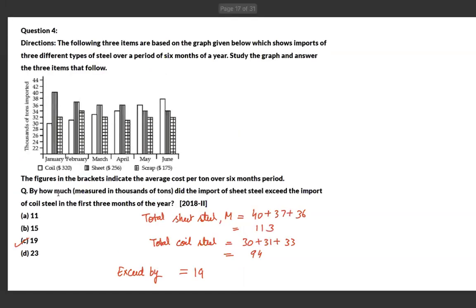The third question asks by how much sheet steel imports exceeded coil steel imports in the first three months. Calculate the total for each type over those three months and find the difference — the answer is 19 thousand tons.